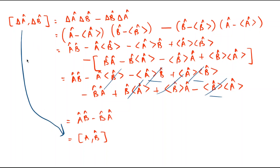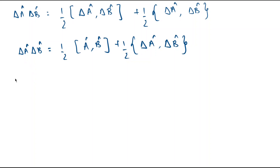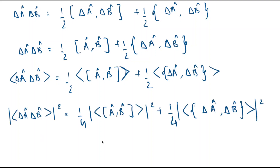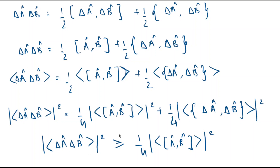Taking the expectation value of delta-A-cap times delta-B-cap, we get one-half the expectation value of the commutator of A-cap and B-cap, plus one-half the expectation value of the anti-commutator of delta-A-cap and delta-B-cap. Taking the modulus squared, we arrive at an inequality where we retain only the commutator term, since the anti-commutator of two Hermitian operators is a real number, allowing us to write the expression in a simplified inequality form.